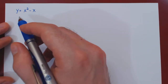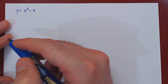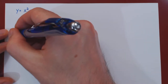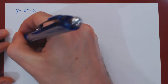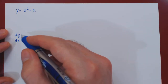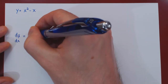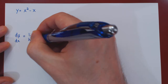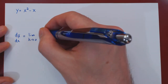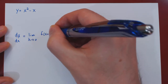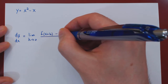In this video, we want to find the derivative of the function y equals x squared minus x. The derivative for any function can be denoted as dy over dx, and can be found by taking the limit as h approaches 0 of the slope of the secant line, which is f of x plus h minus f of x, all over h.